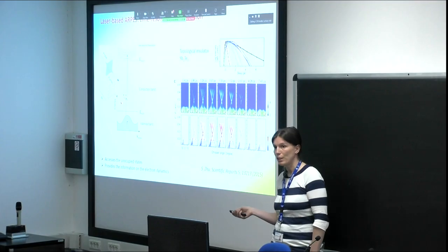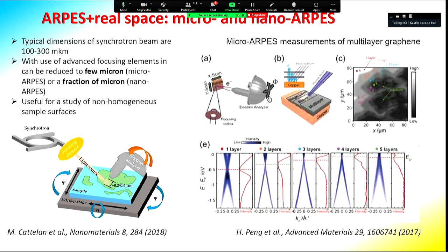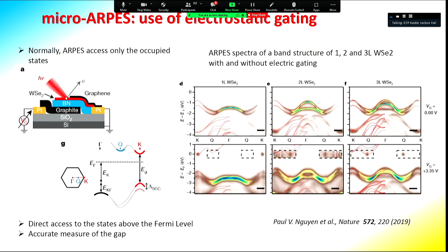Laser-based ARPES can probe the non-occupied band structure and allow studying the dynamics of excited states in time-resolved studies. Extensions of ARPES using focusing elements can reduce the spot size to several microns, allowing study of inhomogeneous samples and very small pieces. One can also use electrical gating for layered materials — applying a voltage to the sample to move the Fermi level and access non-occupied states. This is a very new type of experiment recently performed also at electric synchrotron facilities.